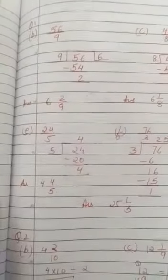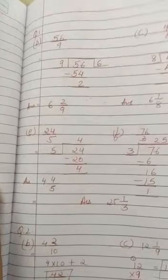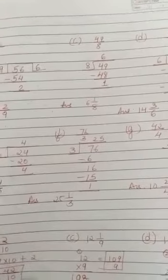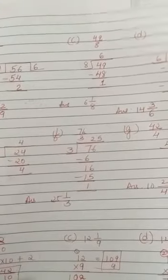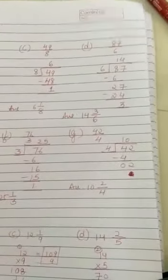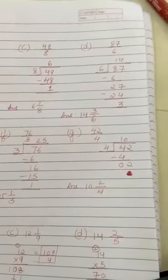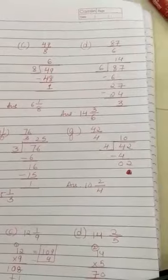Next, 24 upon 5, the fraction became 4 4/5. 76 by 3, the mixed fraction became 25 1/3. Moving on to next, 42 by 4, remainder left with 2, so our mixed number became 10 2/4.